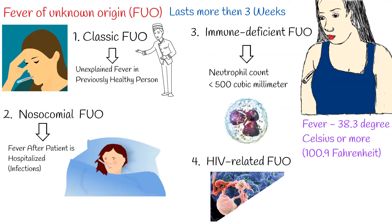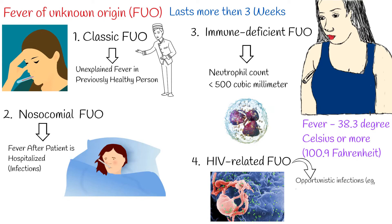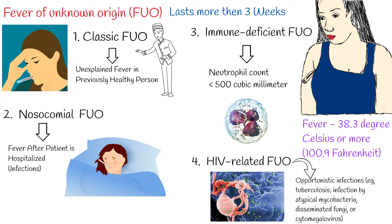The fourth category is HIV-related FUO, where fever lasts more than 3 weeks and the patient has HIV infection. In patients with HIV infection, opportunistic infections — for example, tuberculosis, infection by atypical mycobacteria, disseminated fungi, or cytomegalovirus — should be sought.